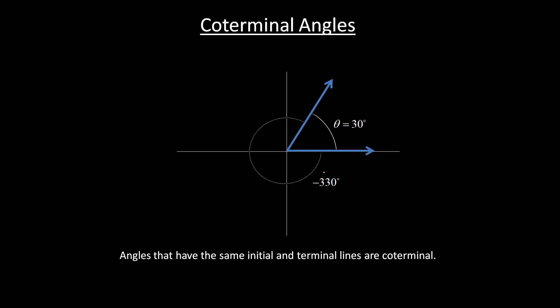And again, if we wanted, we could rotate around more. So let's say we do one full revolution, so that's minus 360, and then we could go another minus 330 to get a minus 690 degrees. And that would be coterminal.